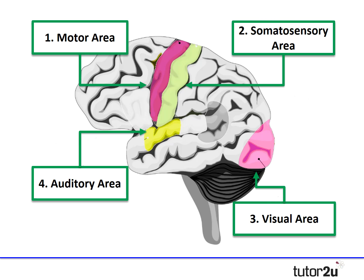Those are your four different areas: motor area, somatosensory area, visual area, and auditory area. What's interesting is that all of those areas are actually located across both hemispheres — I'll come back to that idea when we talk about hemispheric lateralisation later.